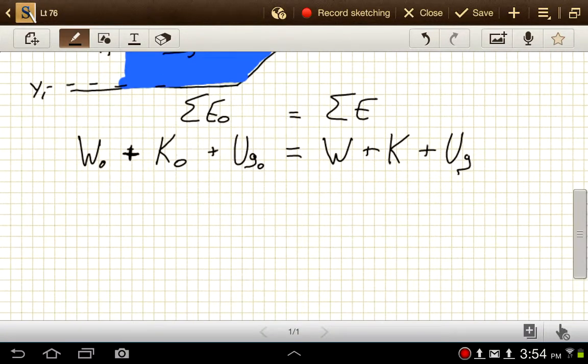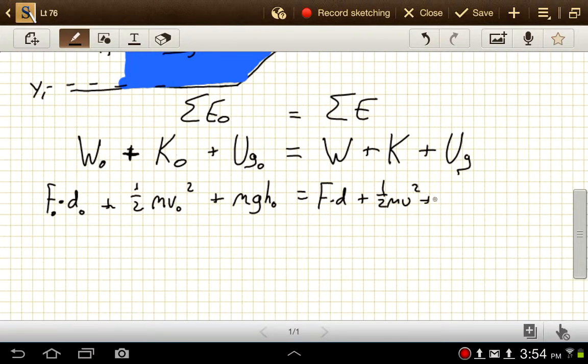And so we would then go on and substitute equations in here. So we've got force times distance, and that'll be for our initial side, plus one-half times mv squared, mv nought squared plus mgh nought is equal to the force times the distance. Make these both initial. Force times distance plus one-half mv squared plus mgh.